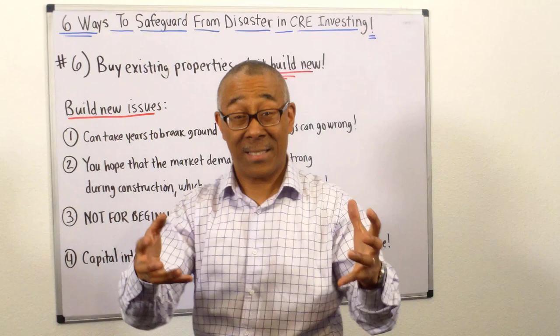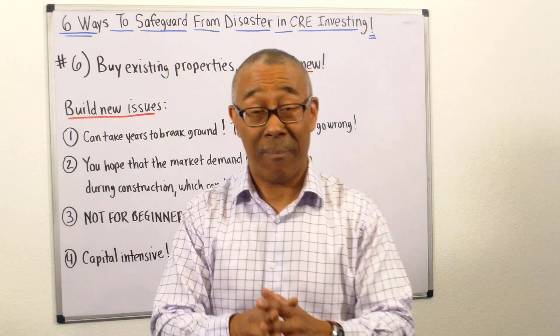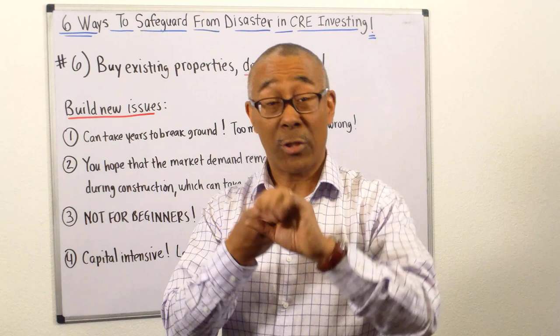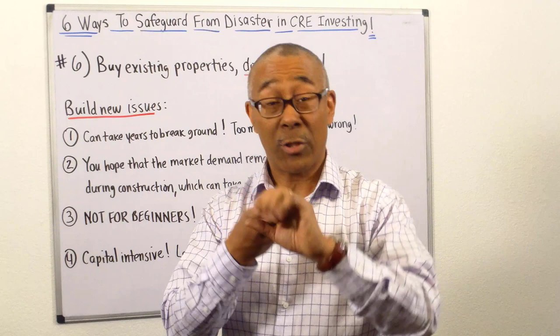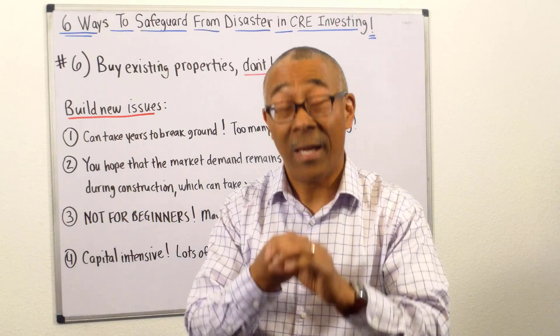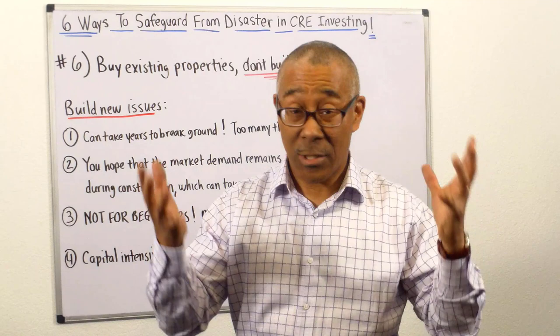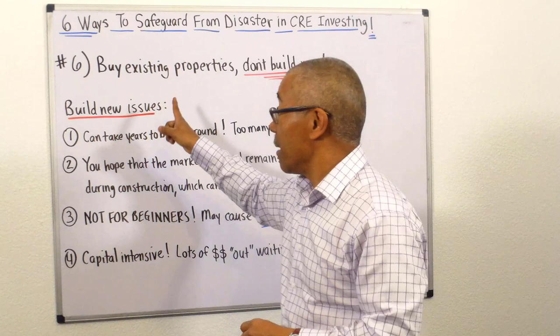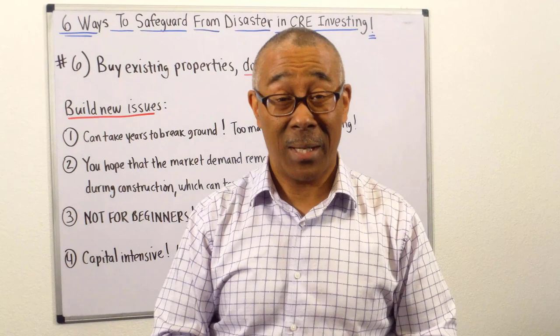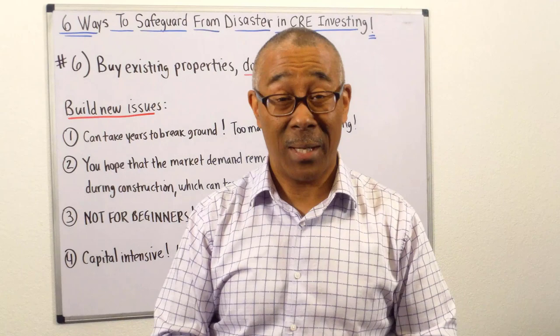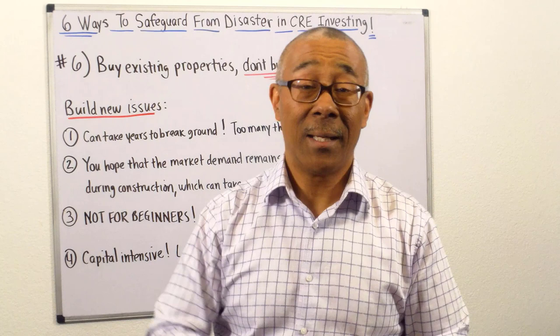Let me recap the six ways to safeguard yourself from disaster in commercial real estate investing. Number one: have an experienced team. Number two: plenty of cash reserves. Number three: have a very conservative exit strategy. Number four: long-term debt to ride out volatility. Number five: buy something always in demand and worth more down the road. Number six: buy existing properties and don't build new. Thank you very much for watching. If you like this video, click like, visit commercialpropertyadvisors.com, or subscribe to the YouTube channel.